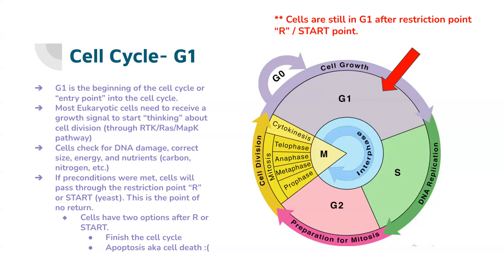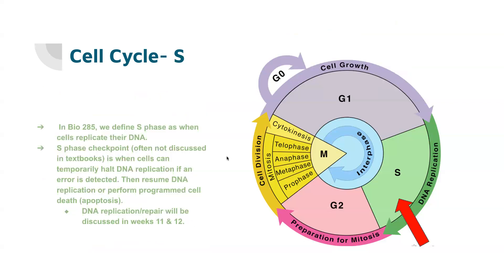They need a growth signal for this to happen, and this is usually most commonly the RTK-RAS MAPK pathway that we talked about in topic five. To get into the next phase, the S phase, also known as synthesis, where DNA synthesis takes place — the actual definition is when cells replicate their DNA. The S phase checkpoint, which isn't discussed in textbooks, is when cells can temporarily halt DNA replication if an error is detected. That's a super important mechanism to keep cells from replicating their DNA if there's an issue. After the issue is resolved, they can resume DNA replication or perform programmed cell death if the issue is too extreme to be repaired.